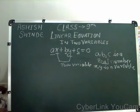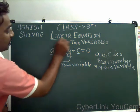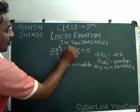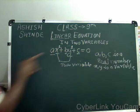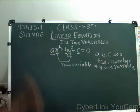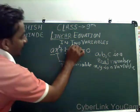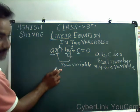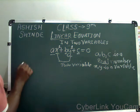First of all, what is a linear equation? Why do we call it a linear equation? A linear equation is called so because its degree is 1. The degree will be 1, therefore it is called a linear equation. And since X and Y are 2 variables, it is called a linear equation in 2 variables.